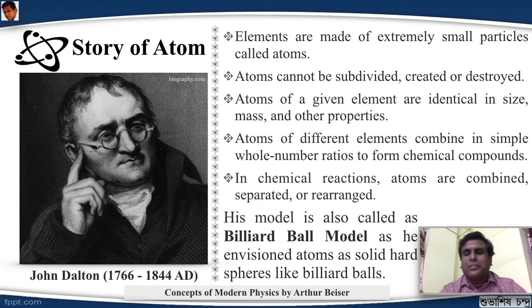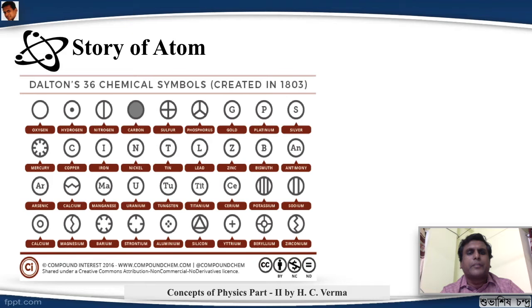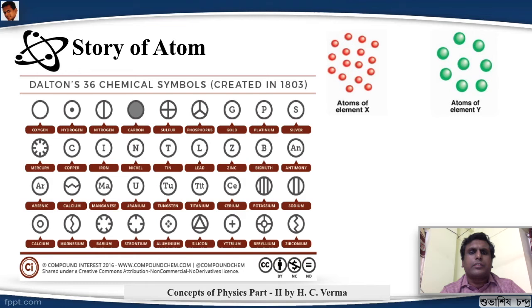In those days, 36 elements were known and Dalton gave symbol for all of them. According to him, if these are the atoms of an element X and these are the atoms of an element Y, then they will combine together in a simple whole number ratio to form such compounds. That was what Dalton's atomic model was.